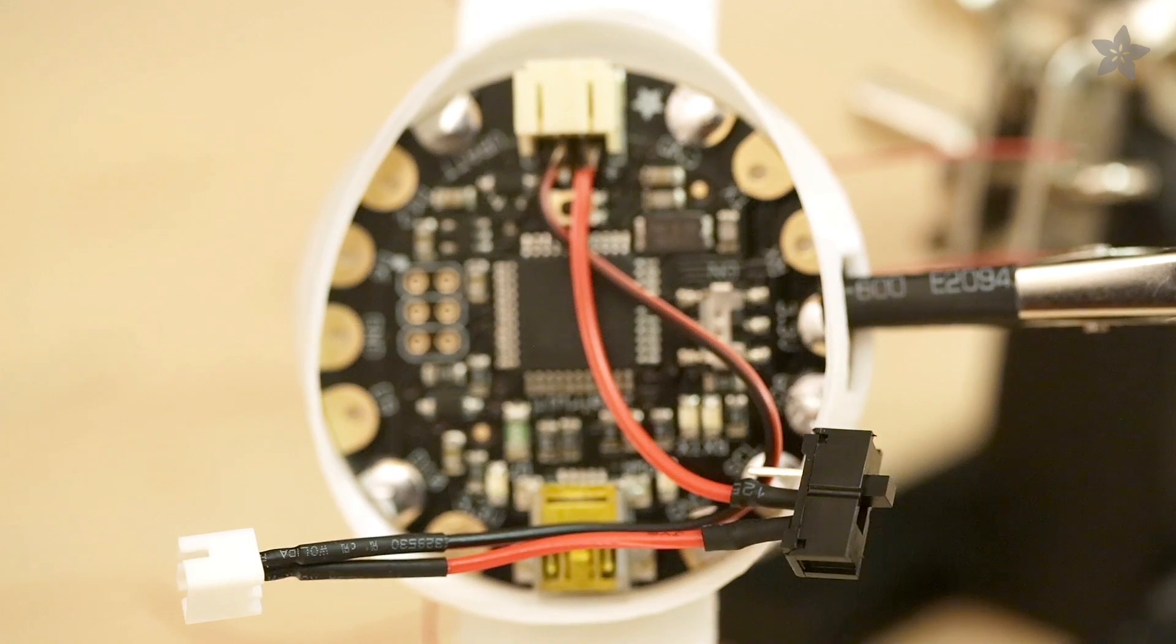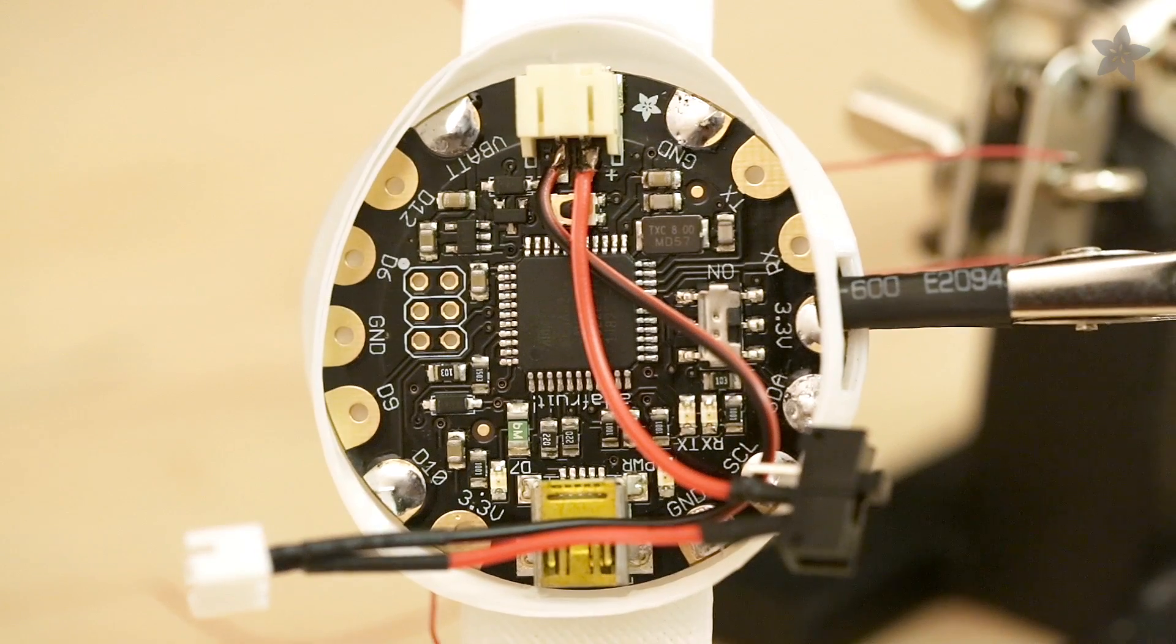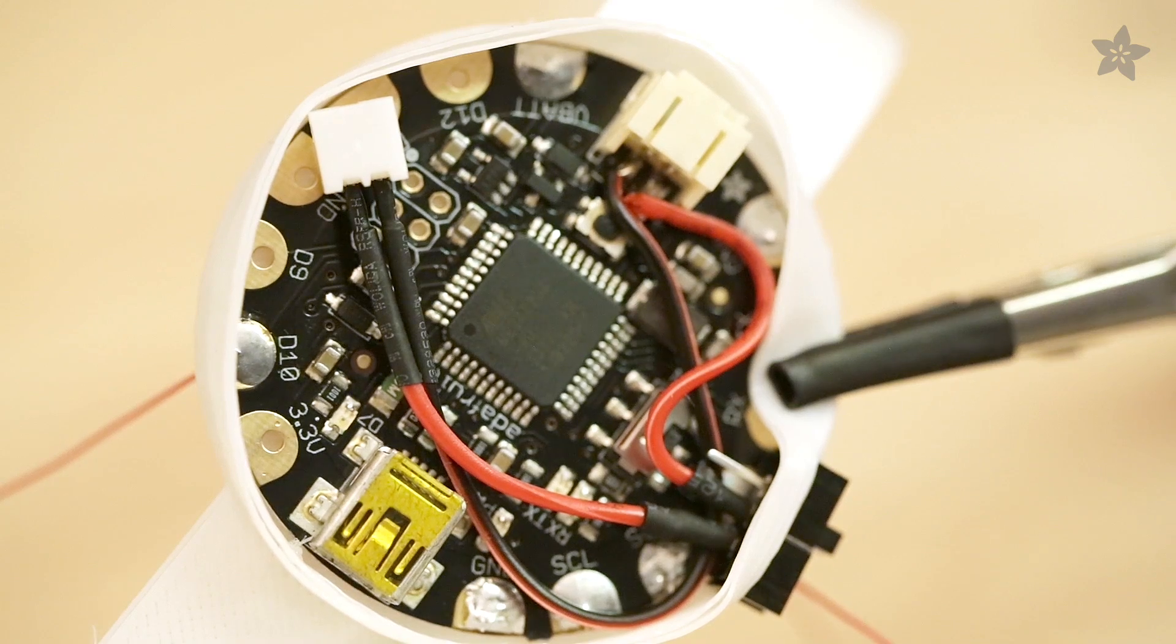The wires controlling the circuit's power live on the front side of the flora, which will face down towards your wrist.